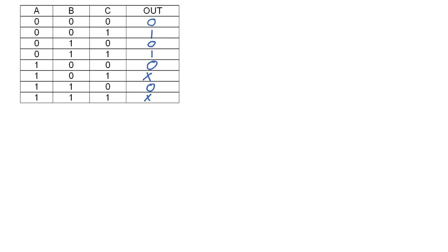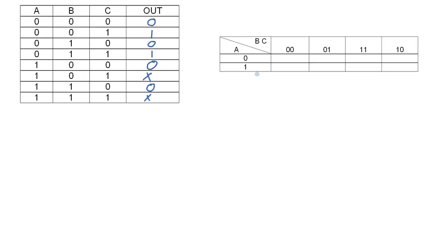The next step is to bring in the Karnaugh map and translate from the truth table into the K-map. Here's my K-map table and I'll take each row to fill in the appropriate cell. So we'll have a 0, a 1, a 1, a 0, a 0. We'll also take the X's from the truth table and put them in the K-map — an X here, an X here, and a 0 here.